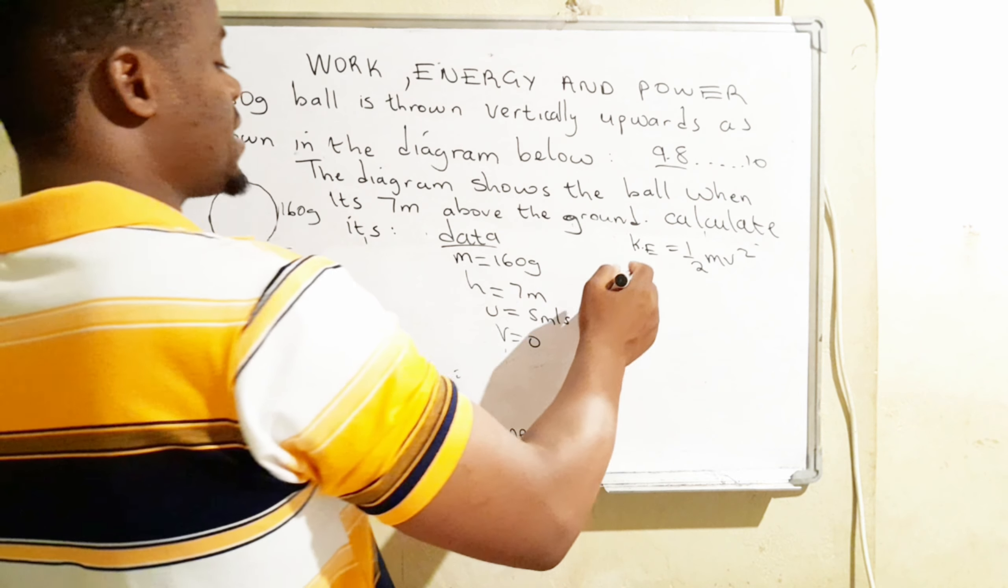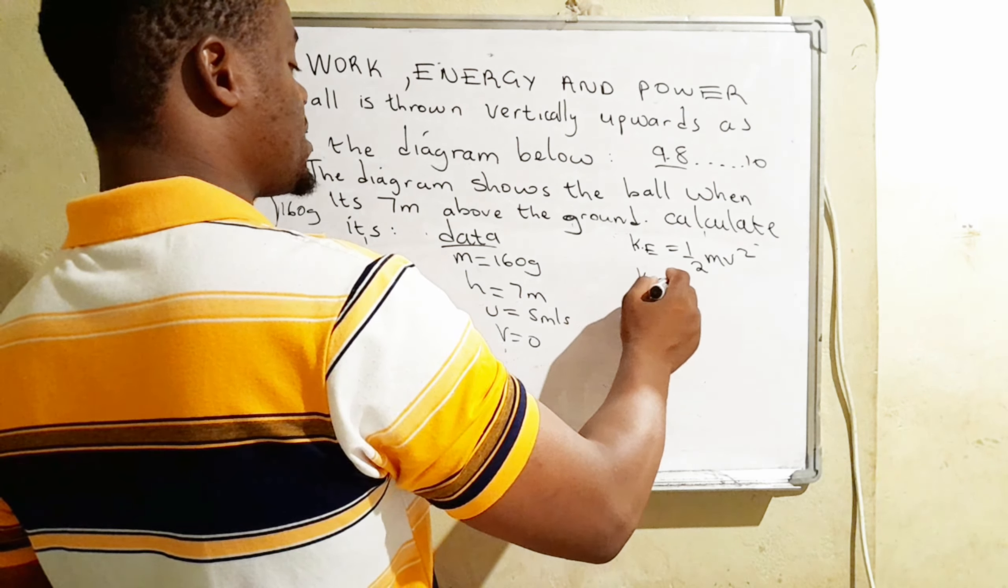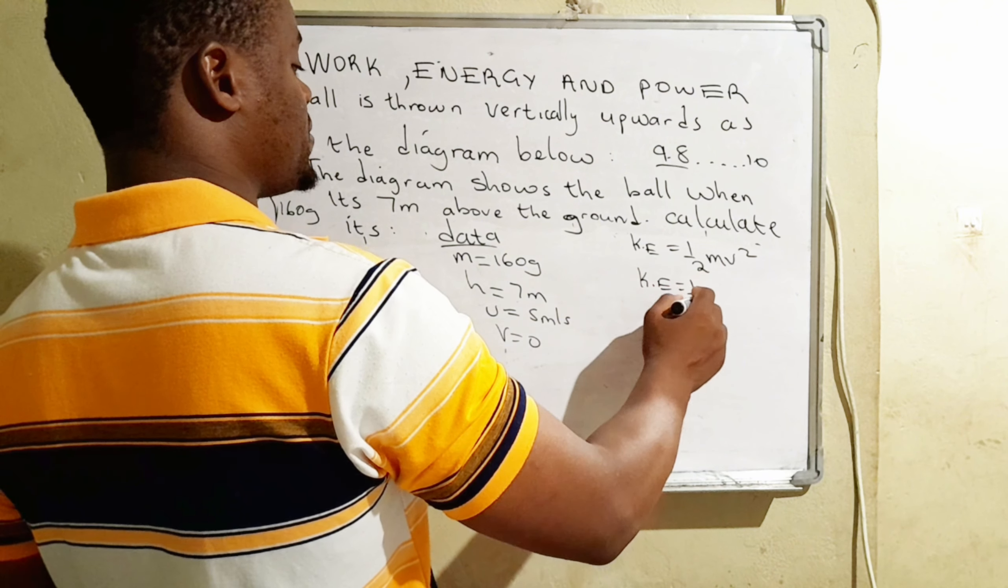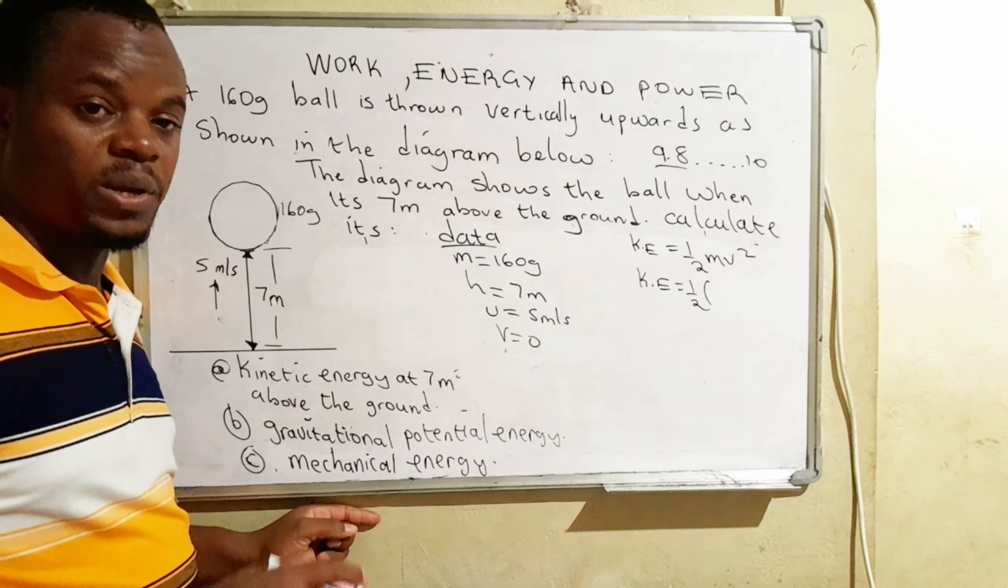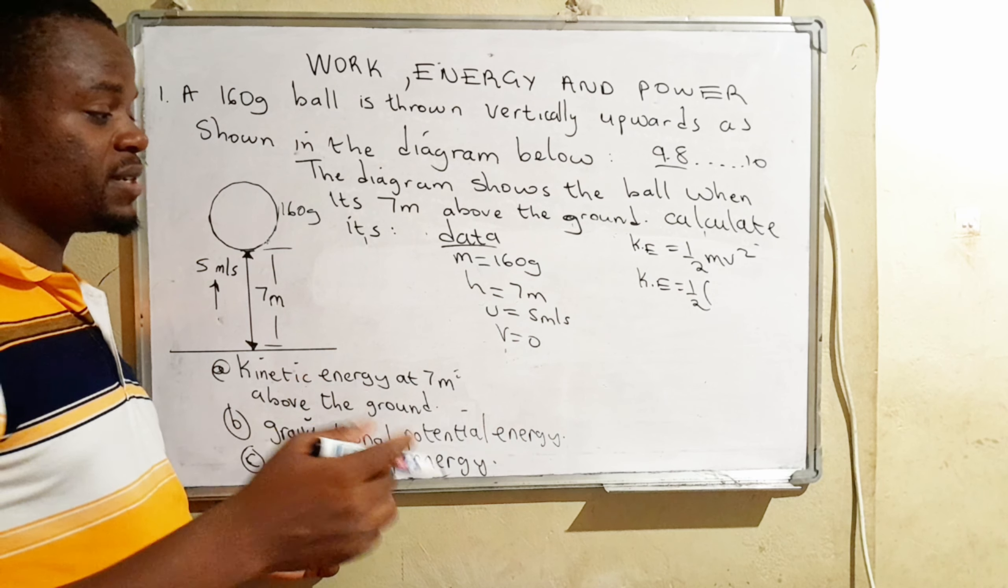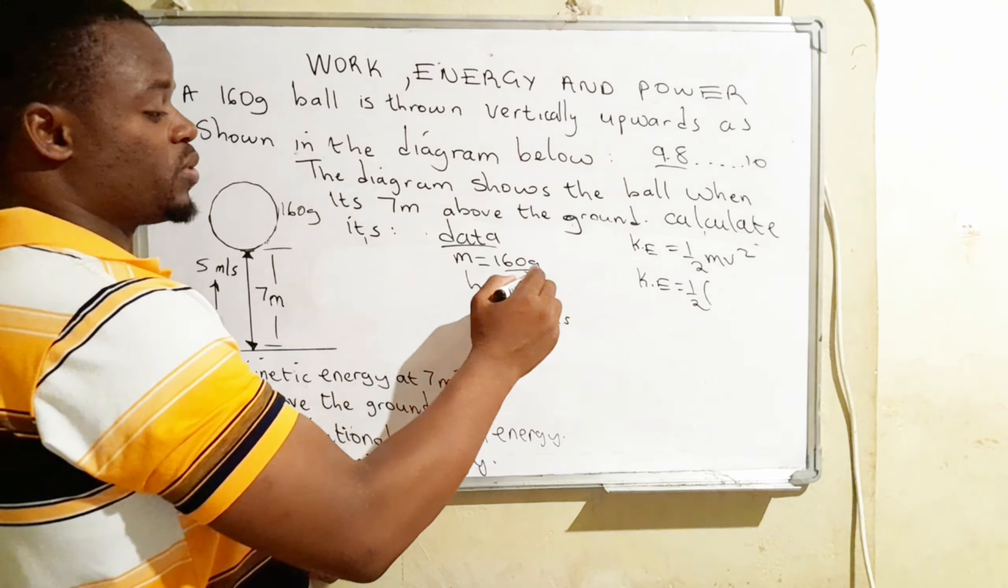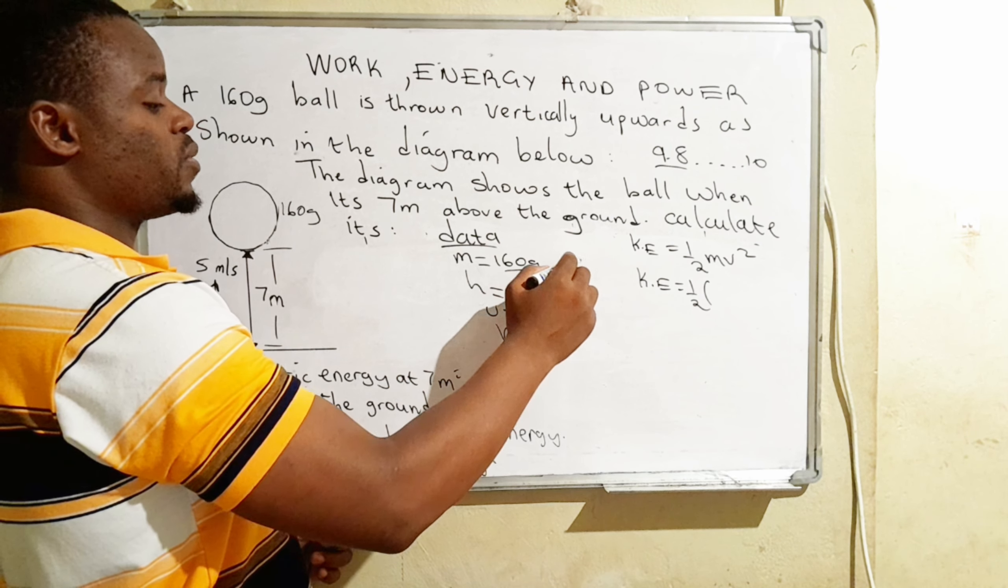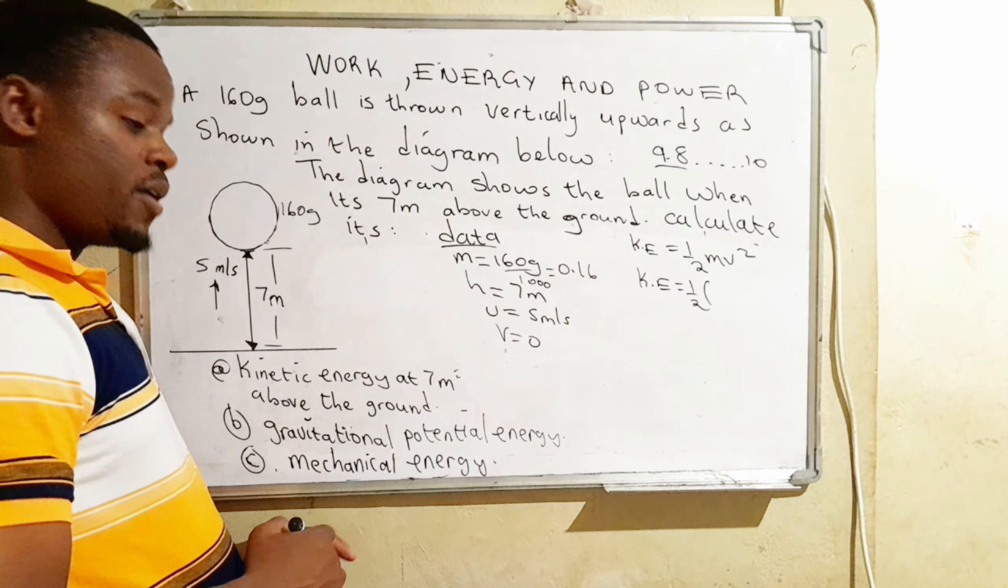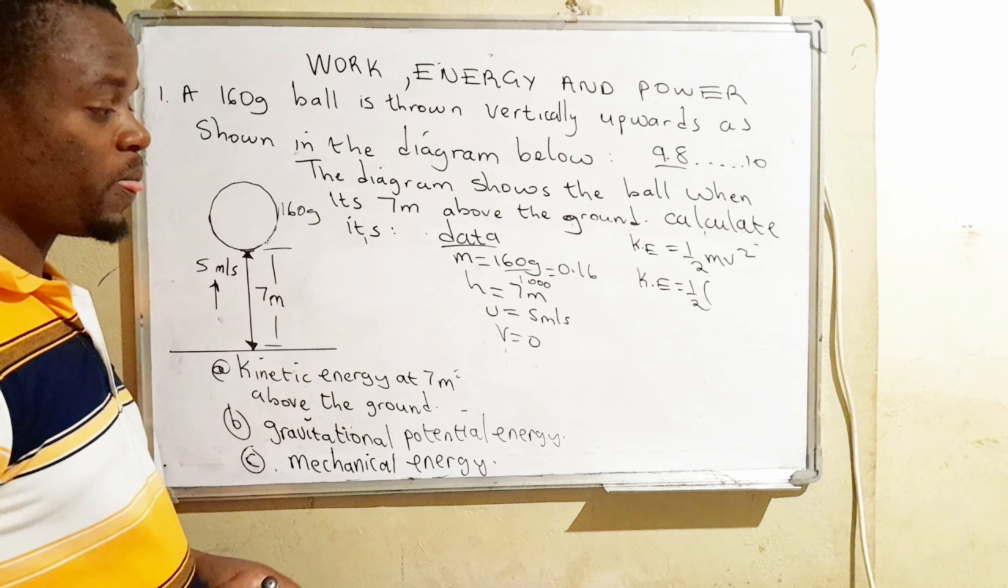So now, how much is the kinetic energy? So kinetic energy is equal to half. What's the mass? The mass is 160 grams. So we need to make sure that it's in kilograms. So to convert this into kilograms, we have to divide by 1000. That gives us 0.16. You can punch the calculator and prove that.